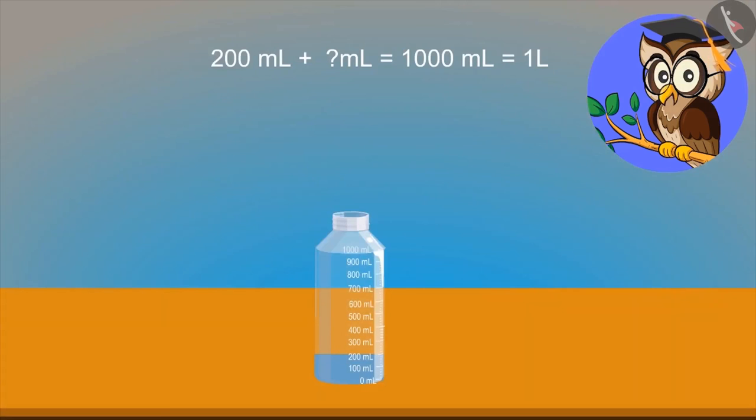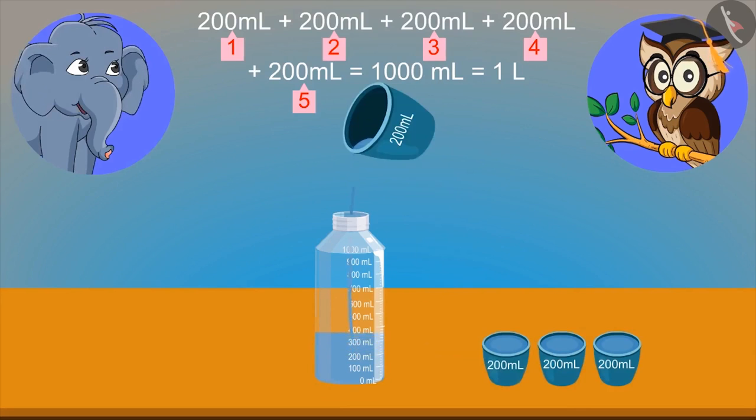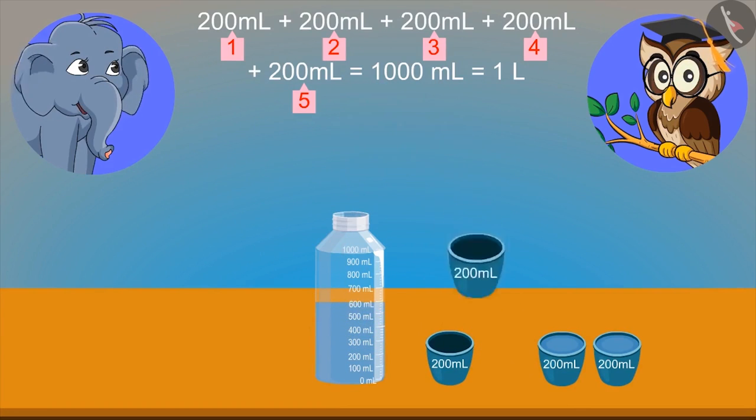Now answer one more question of mine. This bottle contains 200 ml of water. How many times should 200 ml bottles be added to give 1,000 ml of water? I know that adding 200 ml for 5 times gives 1,000 ml or 1 liter.